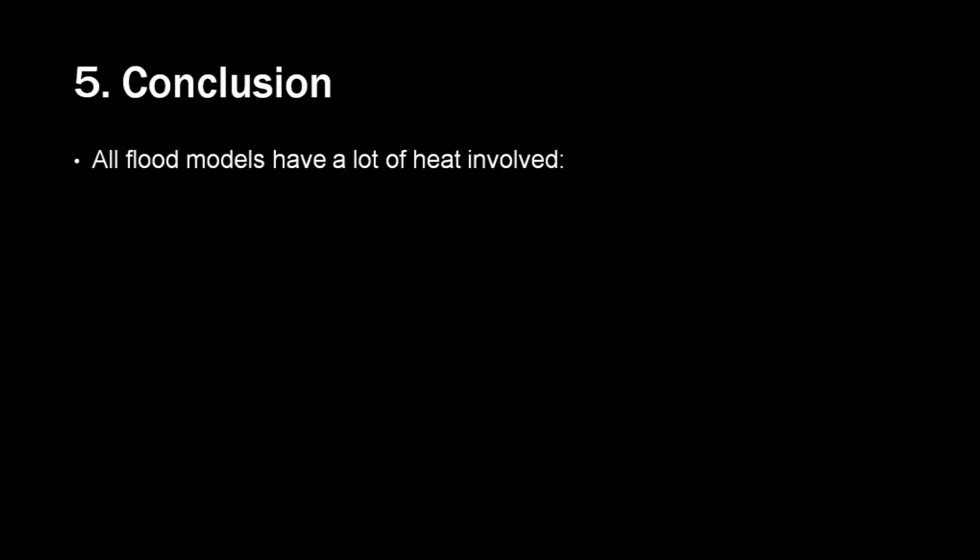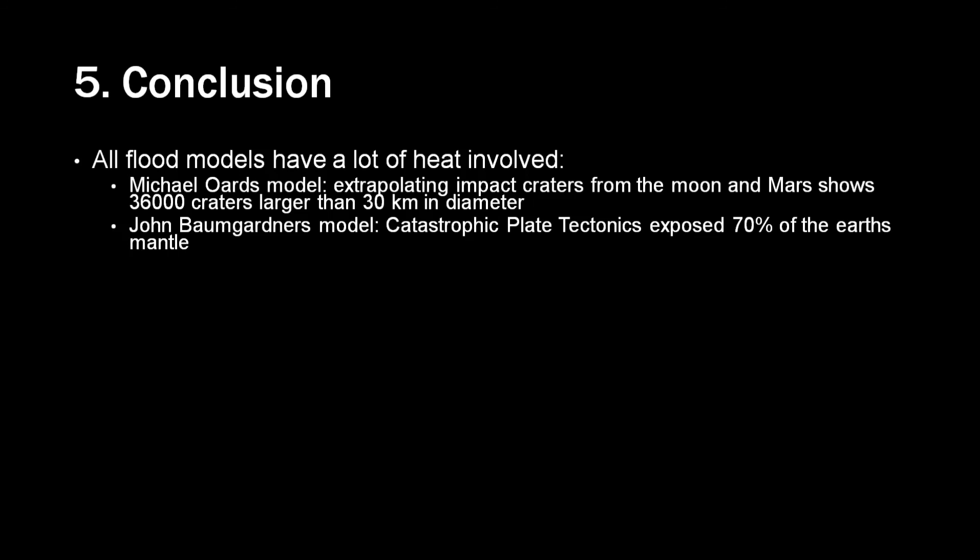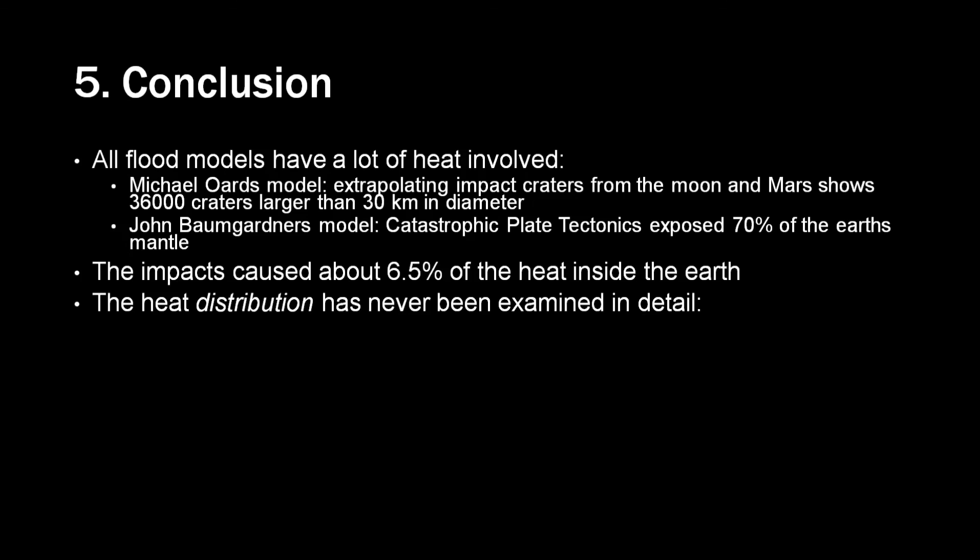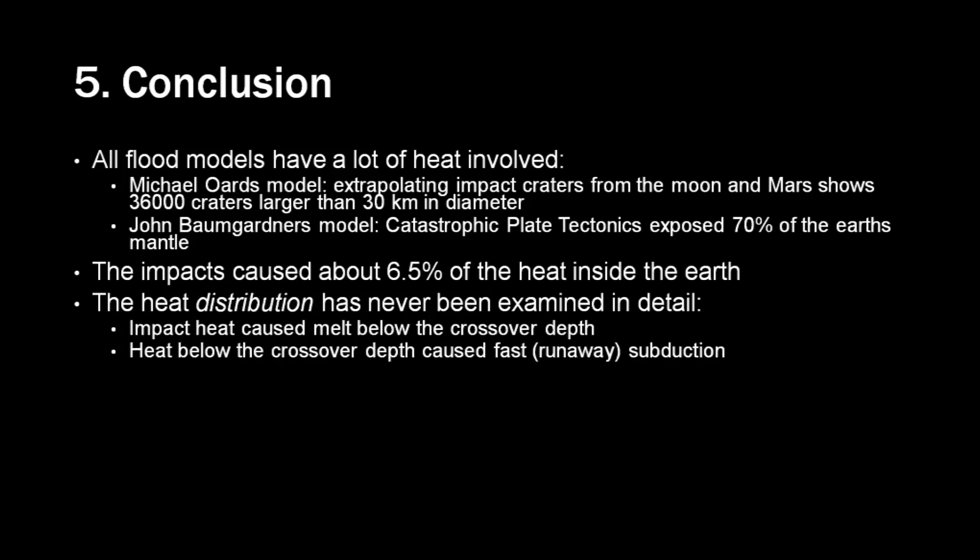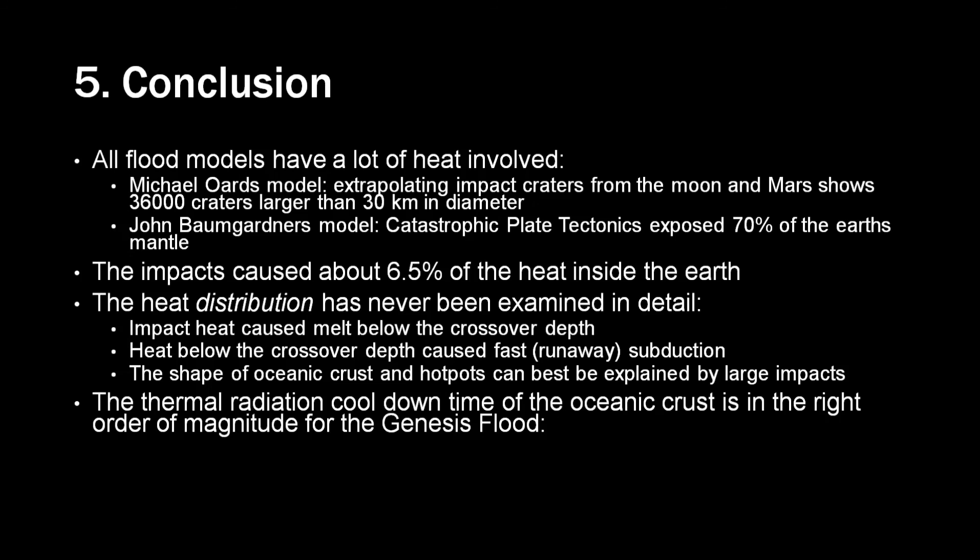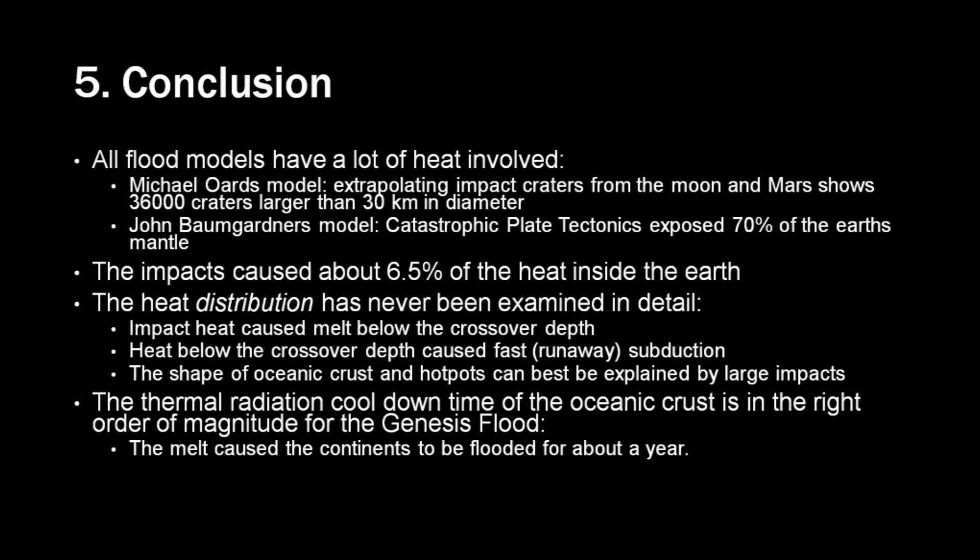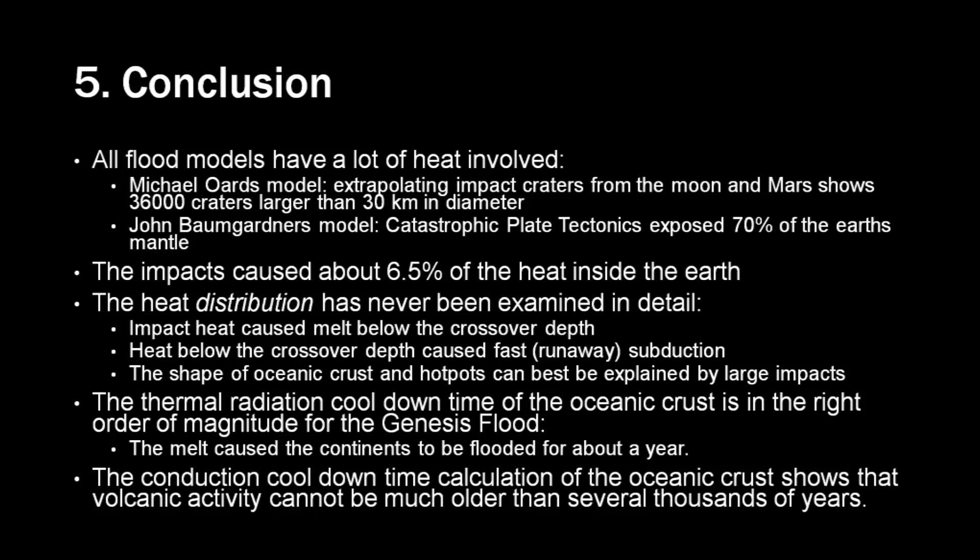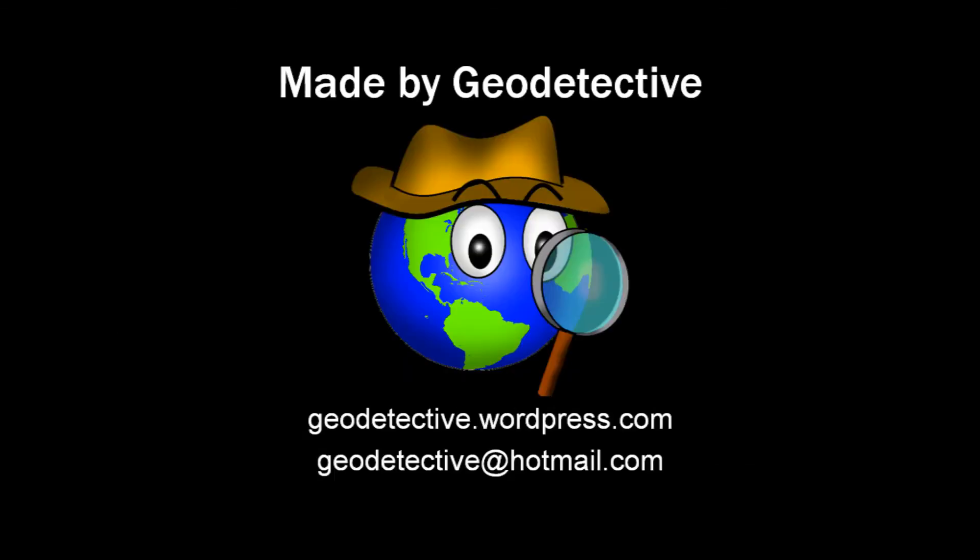All flood models have a lot of heat involved, and we show that for two of the leading flood models. If Michael Ord's meteorite bombardment happened, then about 6.5% of the heat inside the earth is there because of this bombardment. But the heat distribution has never been examined in detail. The consequence of the heat distribution is that the impact caused melt below the crossover depth. Heat below the crossover depth caused the fast subduction that John Baumgartner speaks about. The shape of the oceanic crust and hot spots can best be explained by large impacts. The thermal radiation cool down time of the oceanic crust is on the right order of magnitude for the Genesis flood. The melt caused the continents to be flooded for about a year. And also the conduction cool down time calculation of the oceanic crust shows that volcanic activity cannot be much older than several thousands of years.